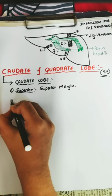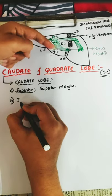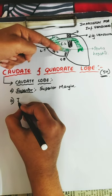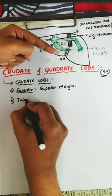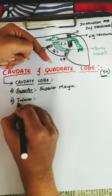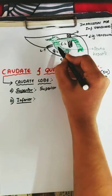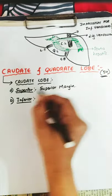Next is the inferior border. The inferior border is the porta hepatis.